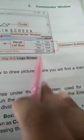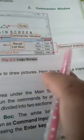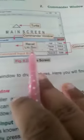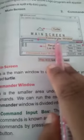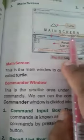This shows the edit commands button, recall list box, commander window, turtle, and this is main screen.